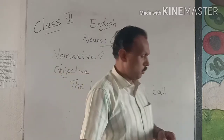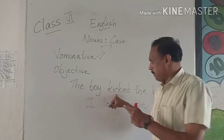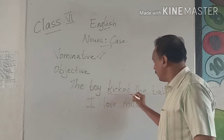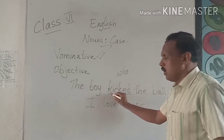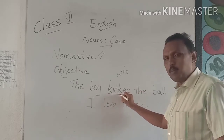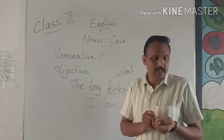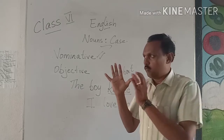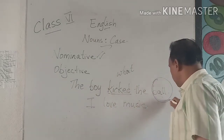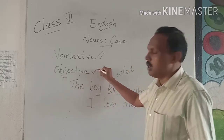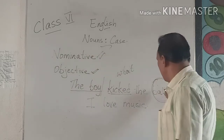Now for objective case. I have sentences on the whiteboard: 'The boy kicked the ball' and 'I love music.' The verb is 'kicked'. Who kicked the ball? The boy kicked the ball — the boy is the subject. What did the boy kick? The ball. So ball is the object, and ball becomes the objective case. The boy is nominative, whereas the ball is objective.